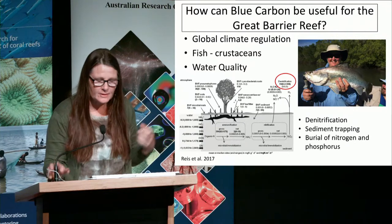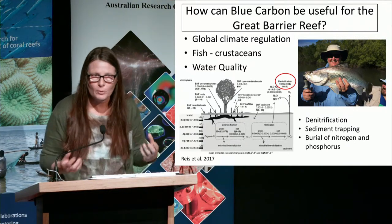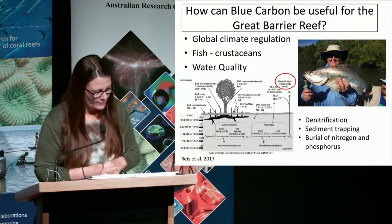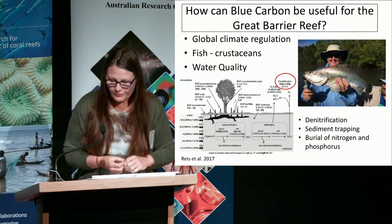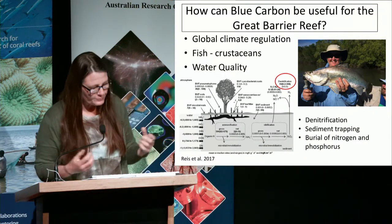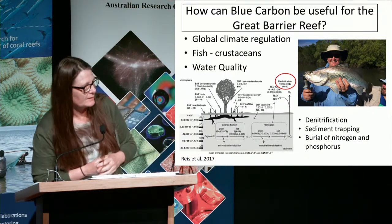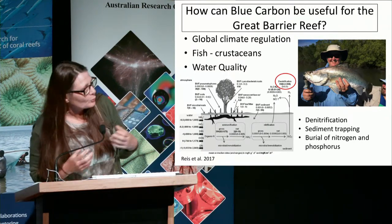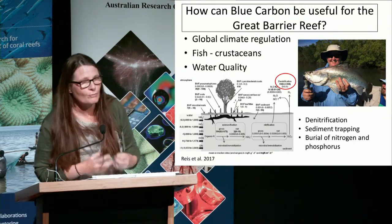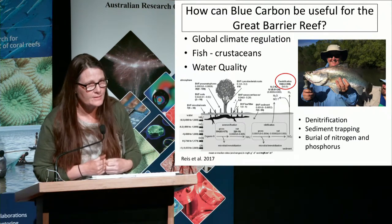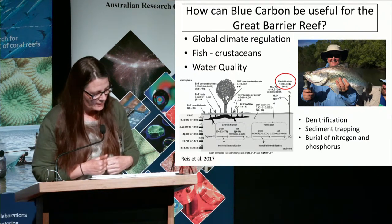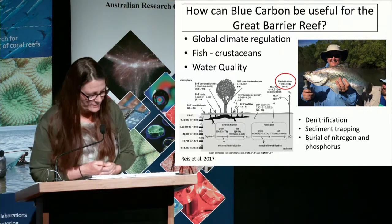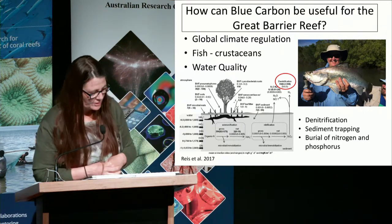I want to talk about how blue carbon can be useful for the Great Barrier Reef. The restoration of coastal ecosystems might help the reef through global climate regulation — trying to reduce our emissions — and in the process meet our national obligations.